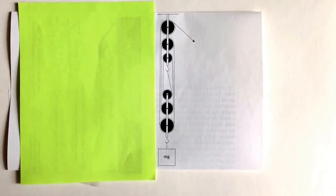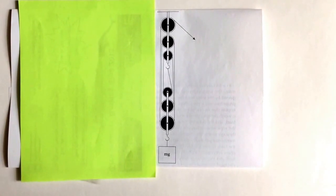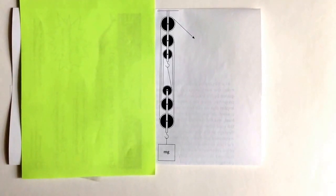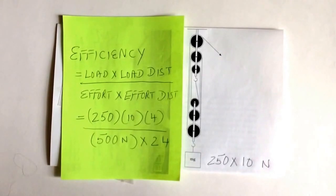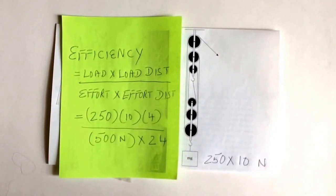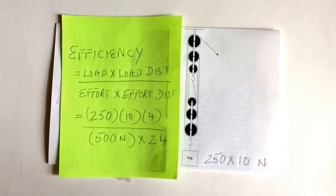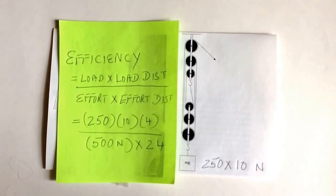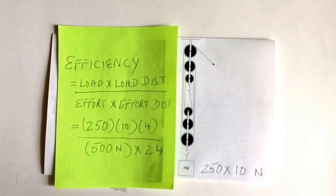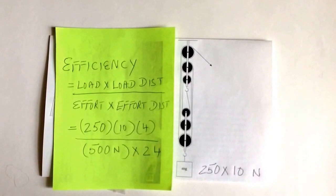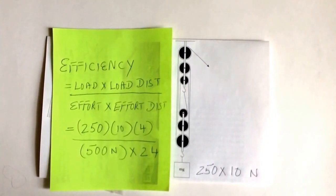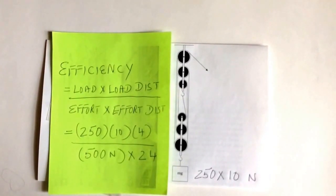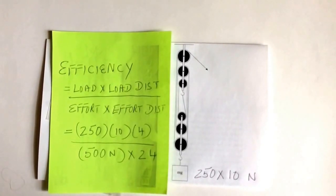Once we keep this in mind, questions about the efficiency of the pulley system are easy to handle. Now let's put some numbers in. Let's say the load is 250 kilograms. So the force acting in the downward direction is mg, or 250 times 9.8 Newtons. Let's approximate this and say it is 250 times 10, or 2500 Newtons. Now suppose an effort of 500 Newtons is required to pull the load up by 4 meters.